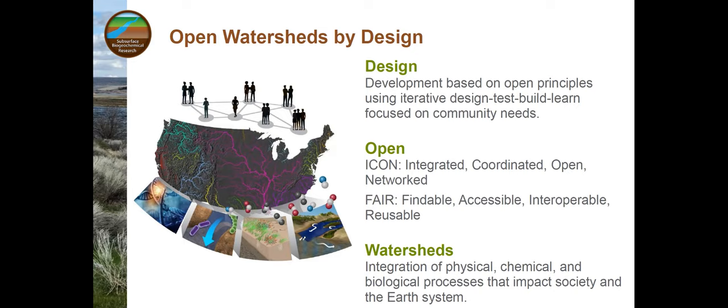Networked is the principle that work is done across systems with the community — not a single researcher in their one system, but doing this in a collective and integrated way. The watershed piece is critical in the sense that we're taking design methods, open principles, and building out this vision in a watershed context. Watersheds fundamentally integrate physical, chemical, and biological processes across terrestrial landscapes, and the outcomes of watershed processes have major impacts on society with respect to water quality, water availability, environmental health, and fluxes that impact the broader Earth system.